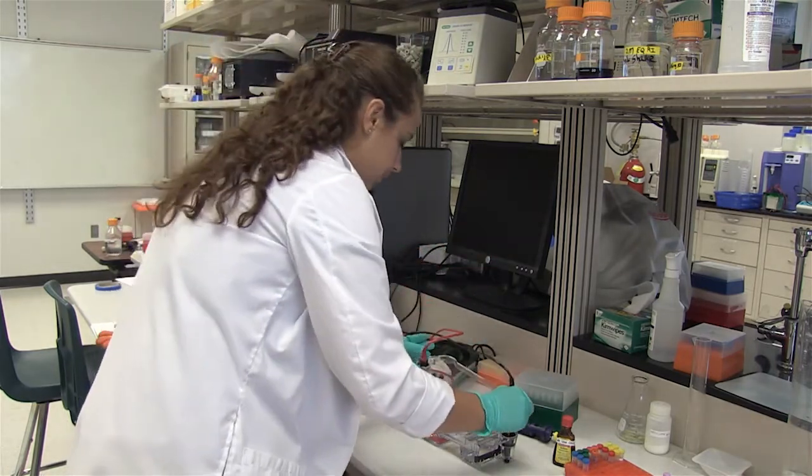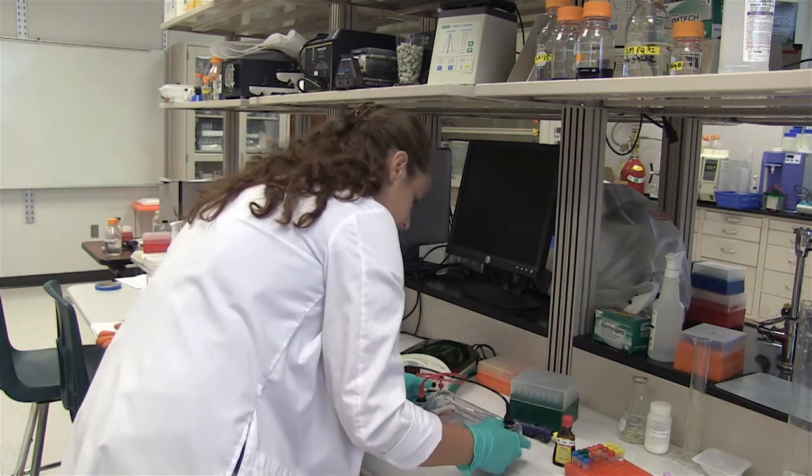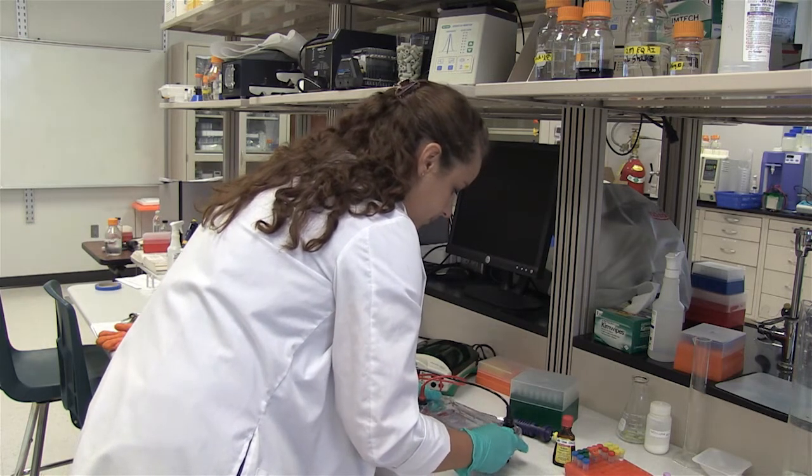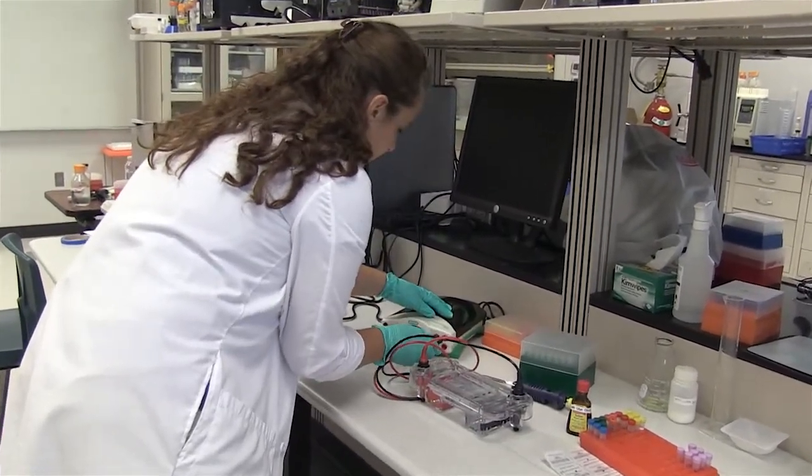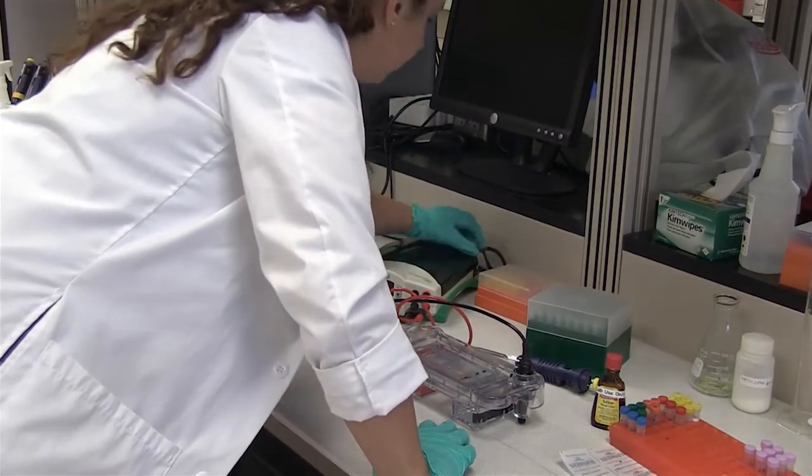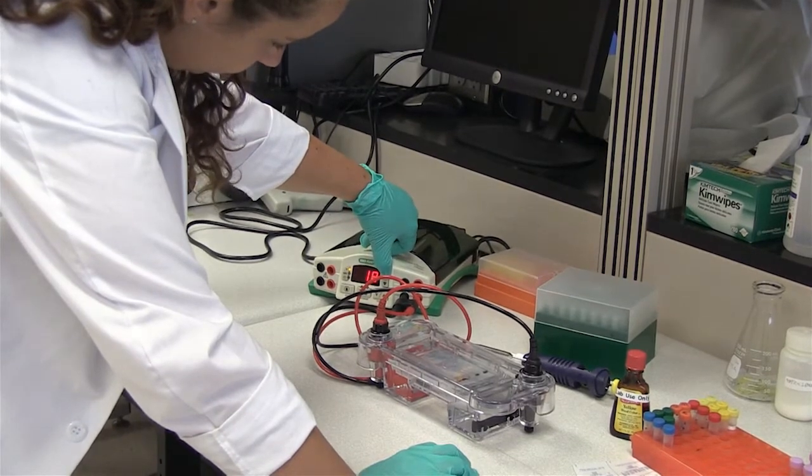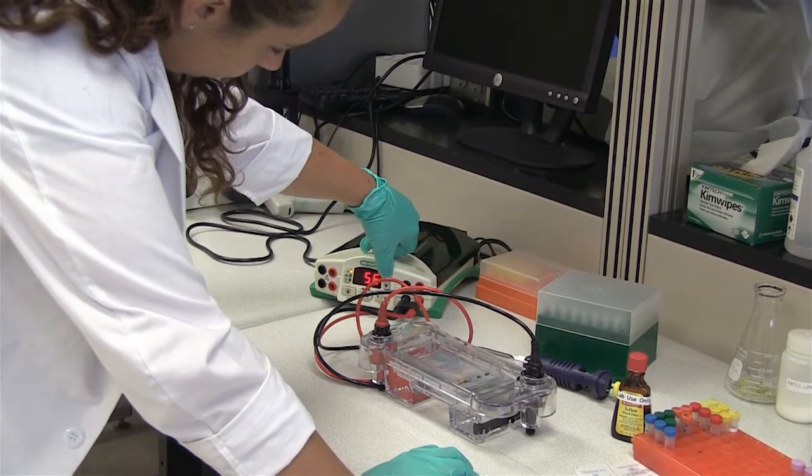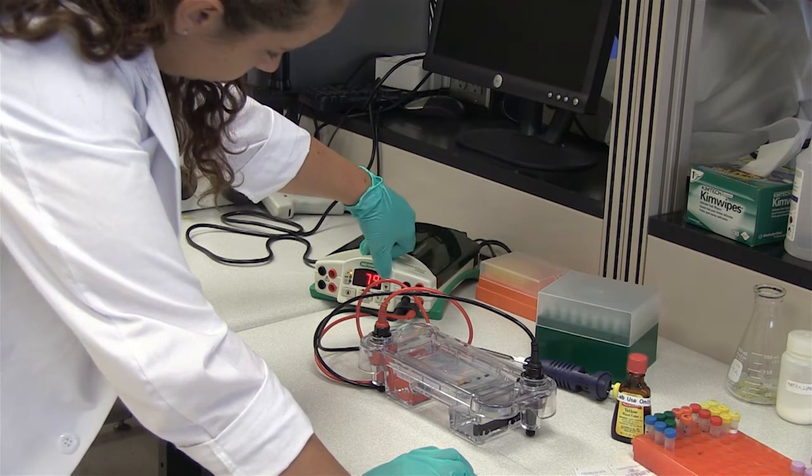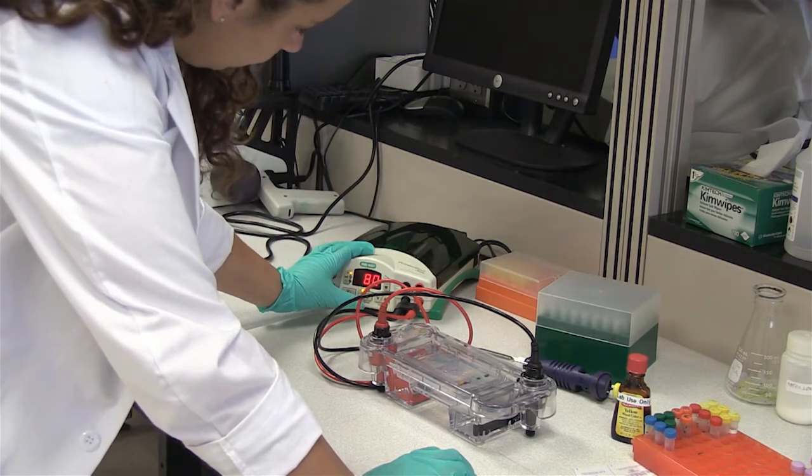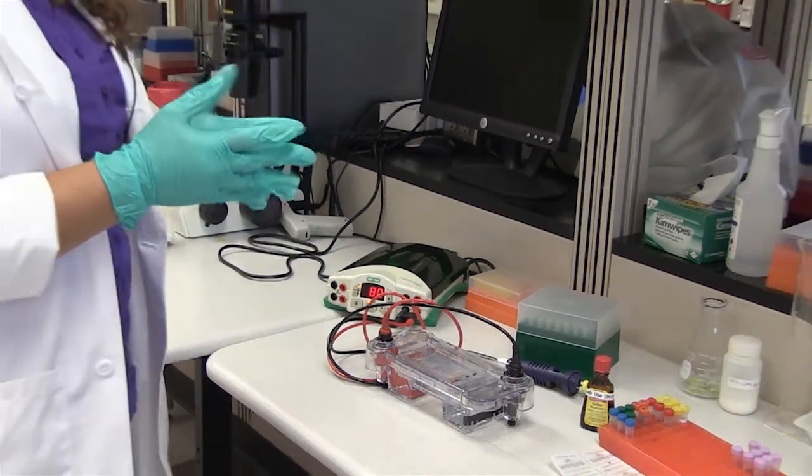So now what we're going to do is put the top of our box back on. Remember that you want to make sure you match up the red with the red, and the black with the black. Plug it in, and turn it on. What we're going to do is set the voltage for 80. And you are going to run your sample for about 45 minutes to an hour, until the dyes actually start to separate into bands.